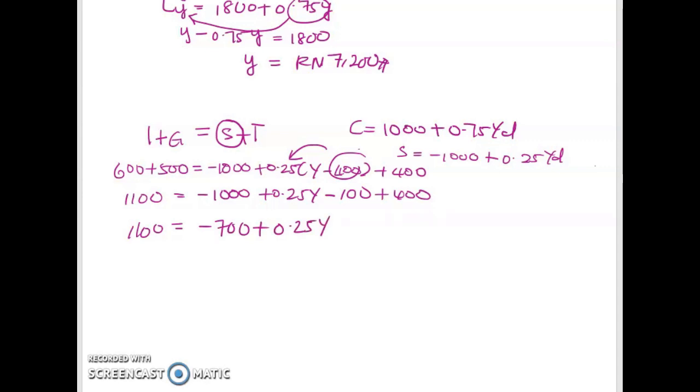Bring 700, negative 700 to the left-hand side and then you get... Now you can solve for Y.